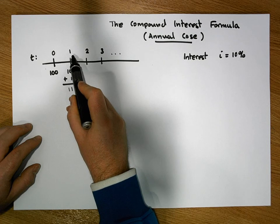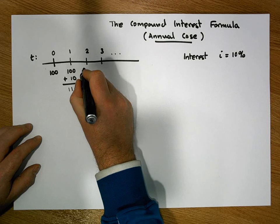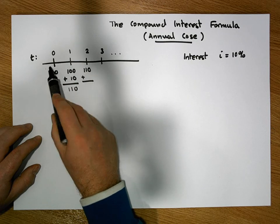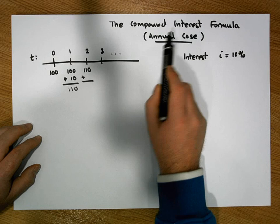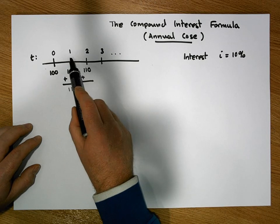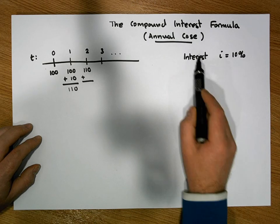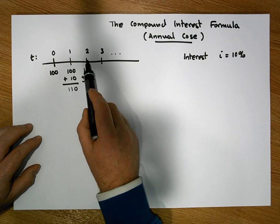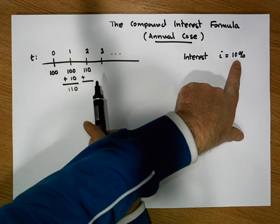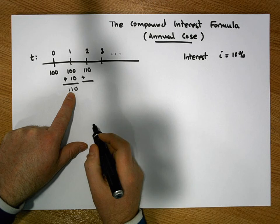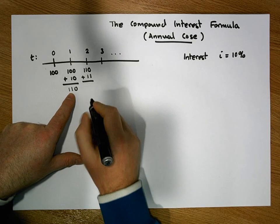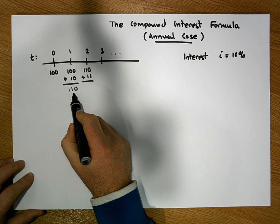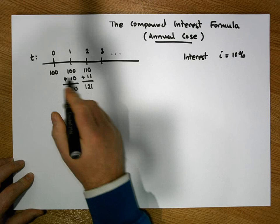Continuing in this fashion, after two years has elapsed we'd expect to have what we had previously — 110 euros — plus a reward. What's important about compound interest is that the interest calculation is always based on what we had in the account in the previous year, whereas with simple interest it's always based on the principal investment at time zero. So the reward here is 10 percent of 110 euros, which is 11 euros, giving us 121 euros after two years.